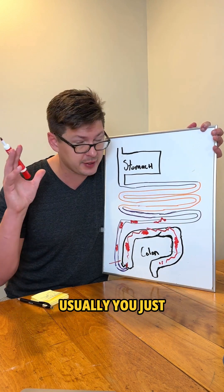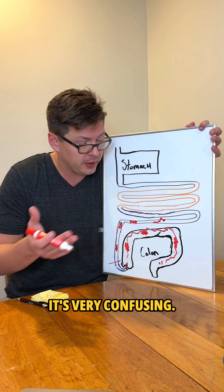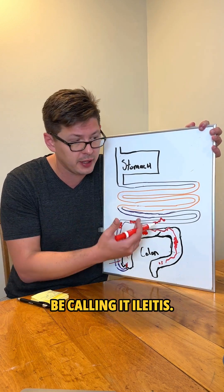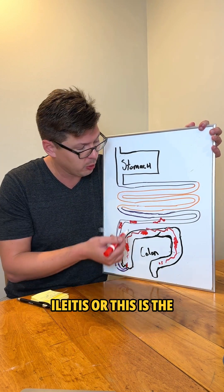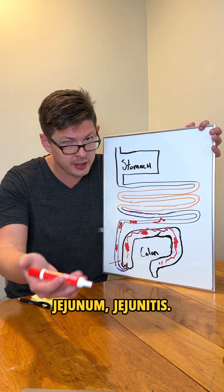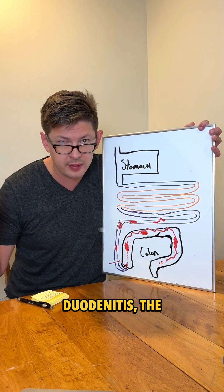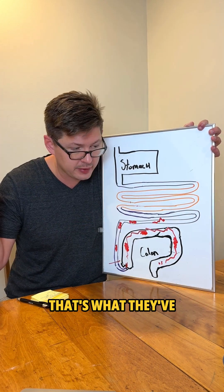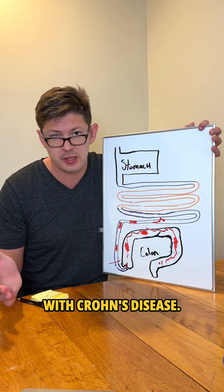It's a horrible, very confusing term. They shouldn't be using it — they should be calling it ileitis, because this is the ileum. This is the jejunum, so it should be jejunitis. This is the duodenum, so duodenitis. The stomach: gastritis. That's what they've been doing since the dawn of time. I don't know why they're doing this with Crohn's disease.